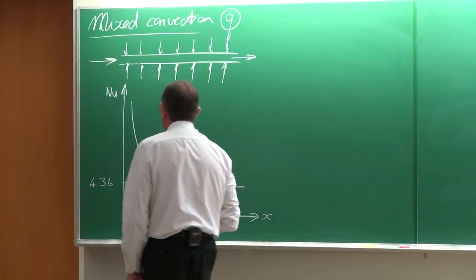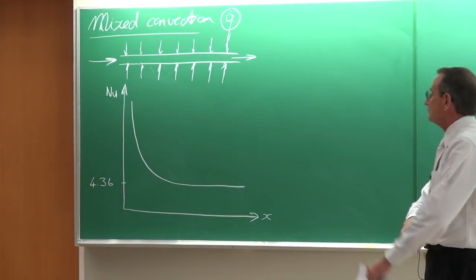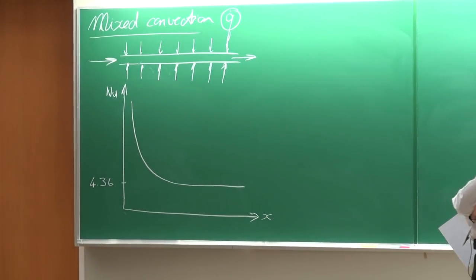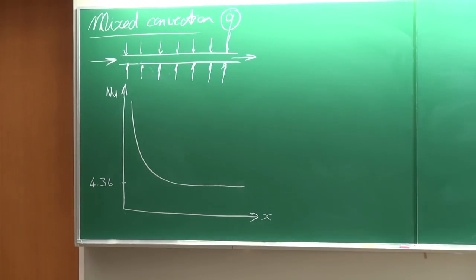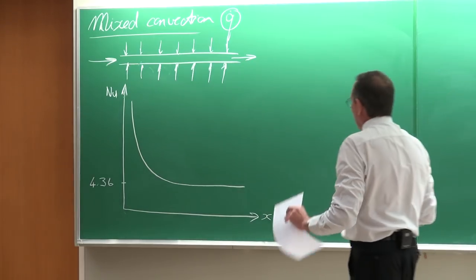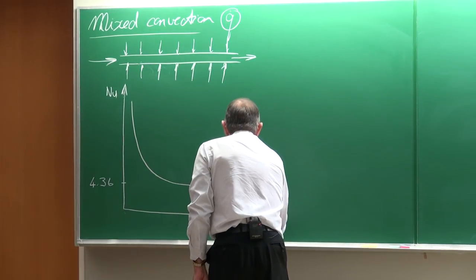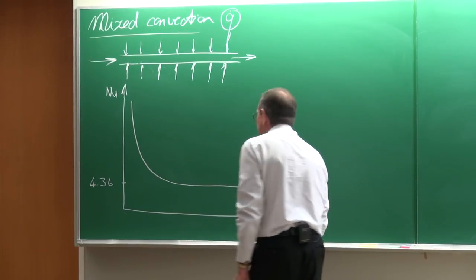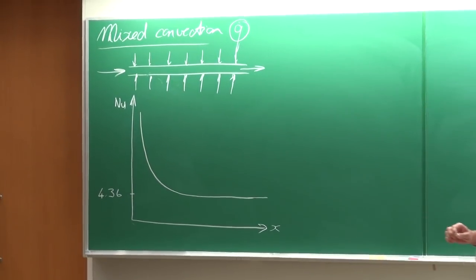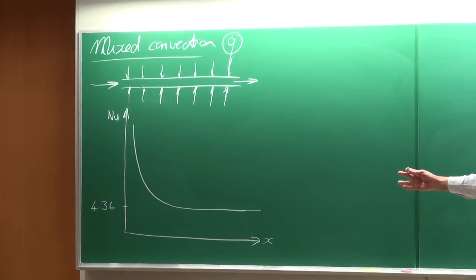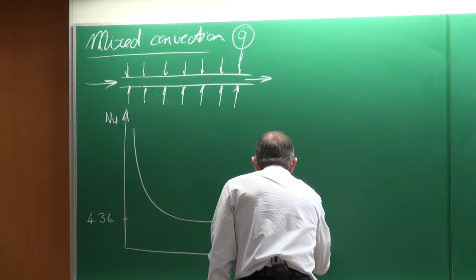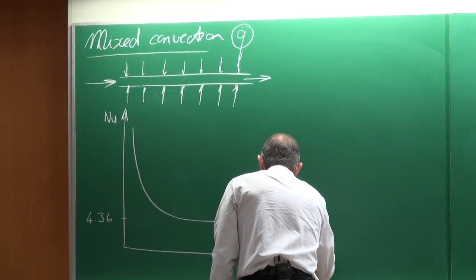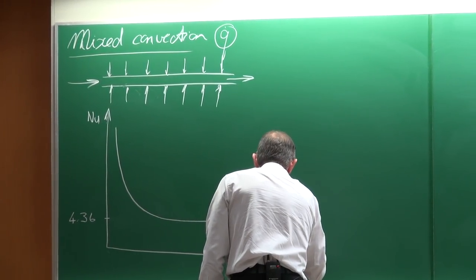For the case of a constant heat flux, that will go to 4.36 — that has been theoretically derived in your textbook. For a constant wall temperature, it's about 3.3 or 3.6, something like that. However, if you go and try to do this experimentally, you will find you almost never get this. This almost never happens.